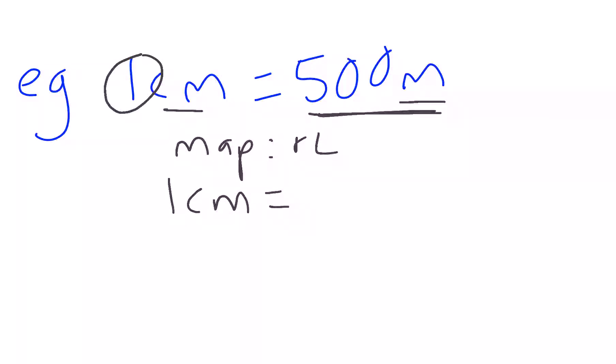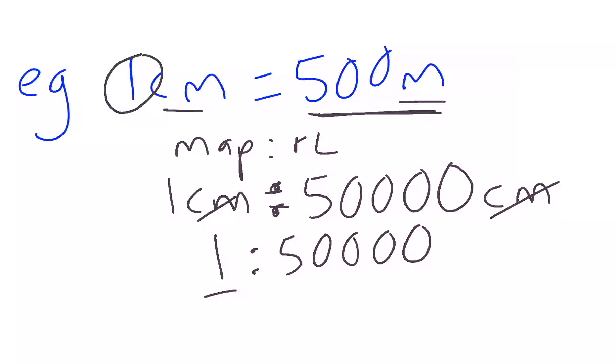There's 100 centimeters in a meter, so I multiply by 100. Add two zeros. One centimeter on the map is 50,000 centimeters in real life. Marking for a ratio, get rid of the units, and now I have 1:50,000. We got back to a map scale. This scale says one of any unit on the map equals 50,000 of that unit in real life.